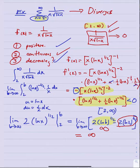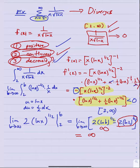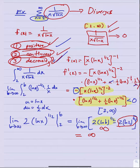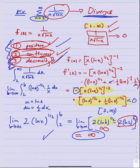Since all three conditions hold, we replace the series with the improper integral from 2 to infinity of 1 over x times the square root of ln x dx. Using the substitution u equals ln x, du equals 1 over x dx, this becomes the limit as b goes to infinity of the integral of u to the negative 1 half du, which evaluates to 2 times ln x to the 1 half, evaluated from 2 to b. Taking the limit as b goes to infinity, 2 times ln b to the 1 half blows up to infinity. Therefore, the improper integral diverges, and so this series diverges.